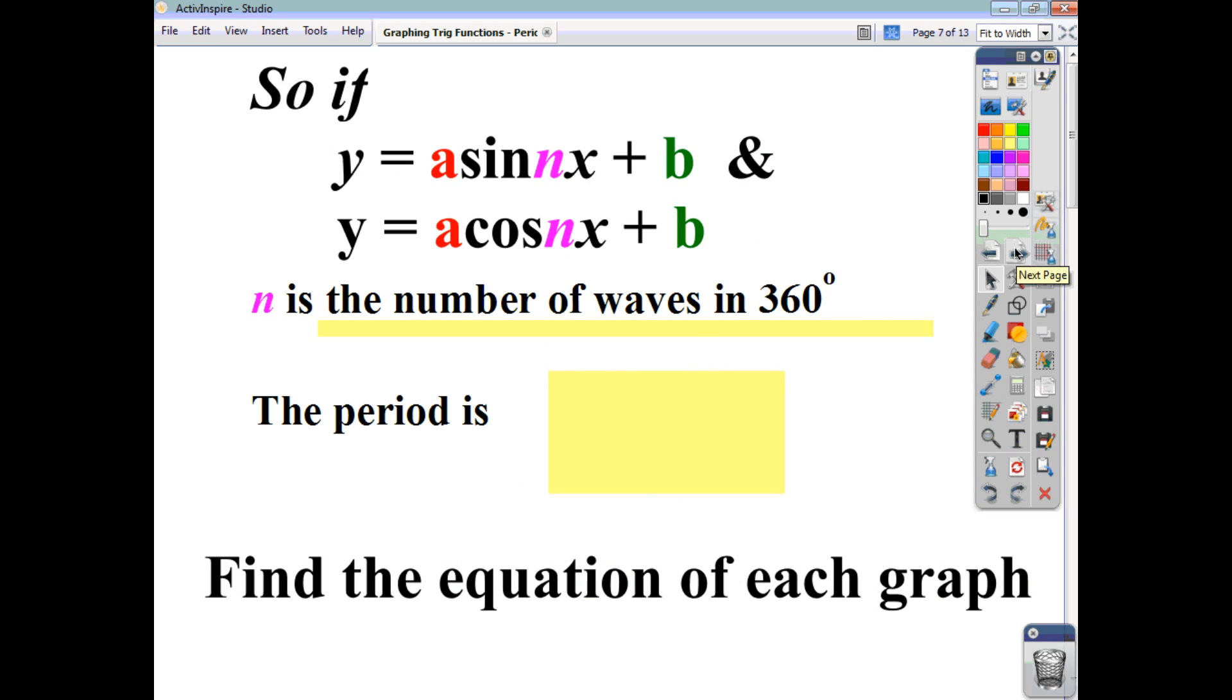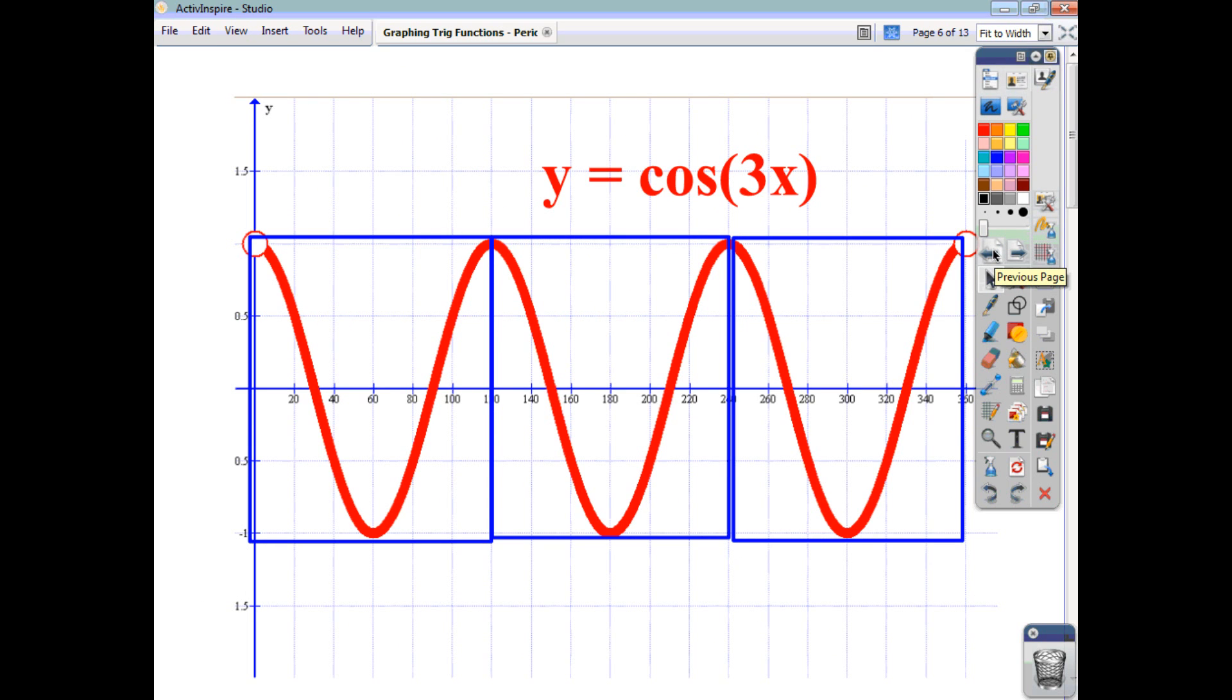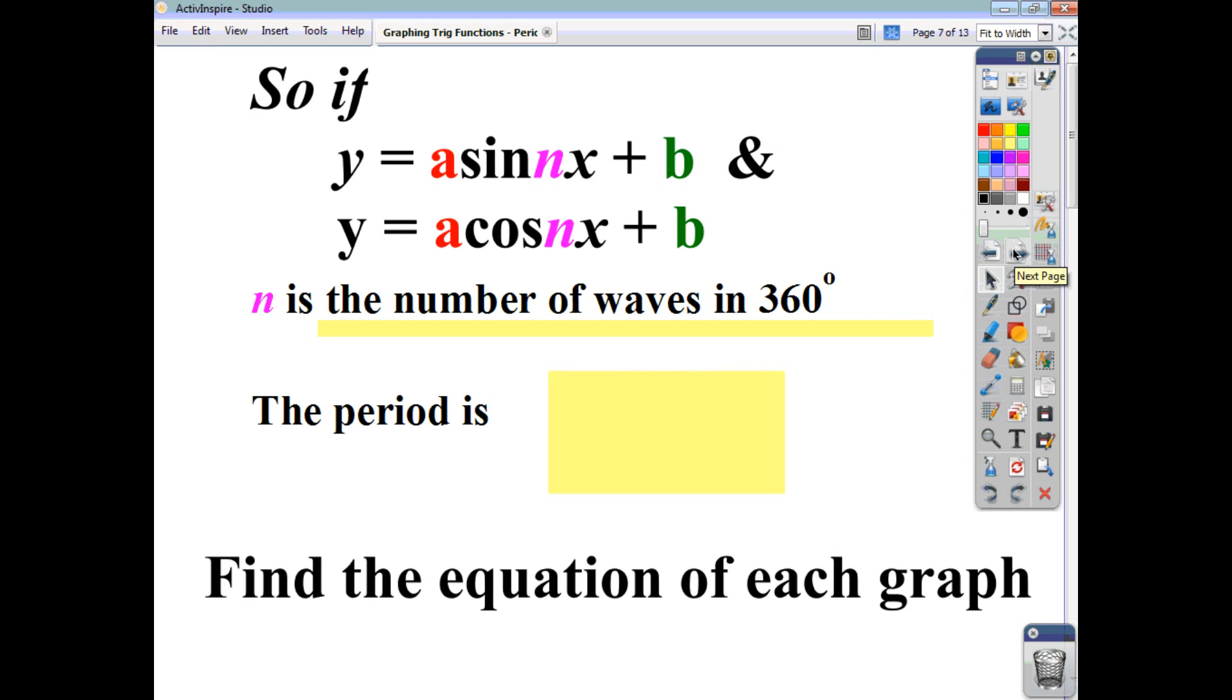Now, the period, if we go back to this one, the period here is going to be 120. No longer 360, but 120. So, what can we say? We can say that the period is just going to be 360 divided by whatever n is.